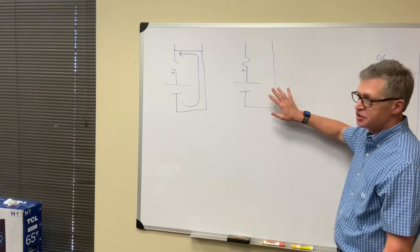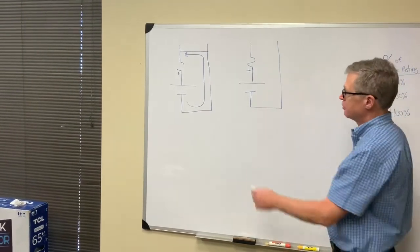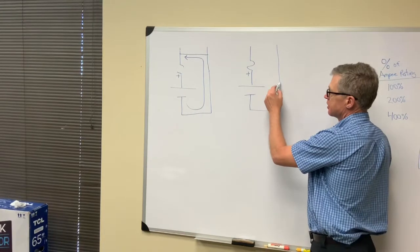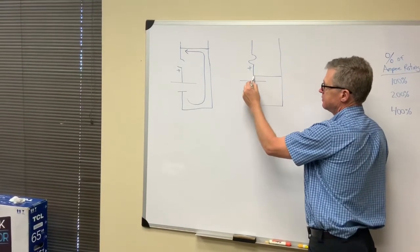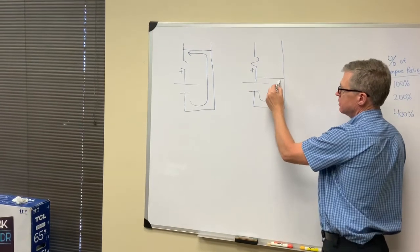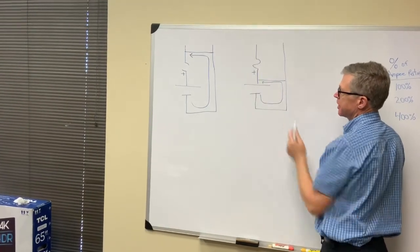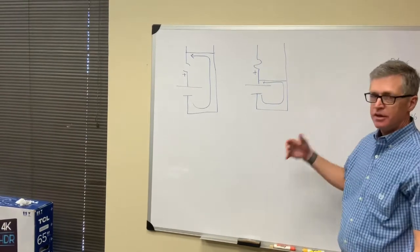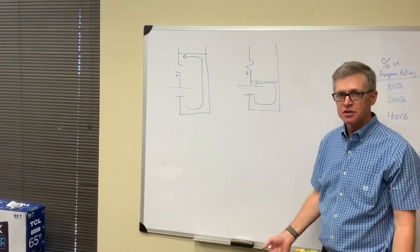Over here is the same battery diagram, and I want to show what happens if a short circuit occurs like inside the fuse. Well, the current will flow like this. The fuse will not open, and the short circuit will continue.